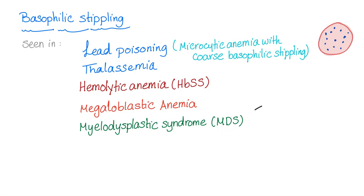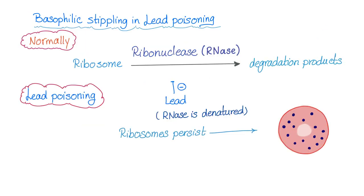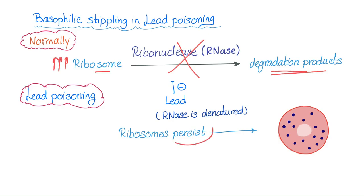MDS is an intermediary gateway between normal and leukemia — specifically acute myeloid leukemia. That intermediate state is called MDS and we will discuss it later. Since basophilic stippling in cases of lead poisoning is very high yield for your exam, let's talk about the mechanism. Normally, an enzyme called ribonuclease degrades the ribosome. In lead poisoning, however, lead denatures this enzyme, so ribosomes cannot be broken down and will build up and persist in the red blood cell — this is basophilic stippling.